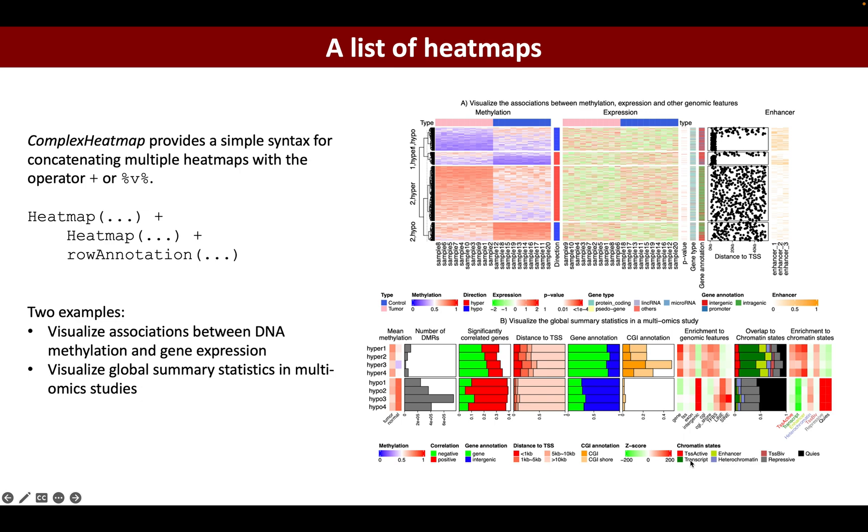There are two examples of complex heatmap visualization. The first one is to visualize the associations between DNA methylation, the red-blue heatmap, and gene expression, the red-green heatmap, and some other additional genomic annotations. You can put them together and see the patterns shared between different sources of information.